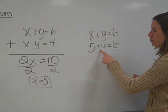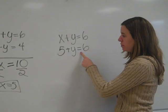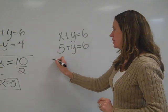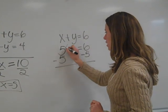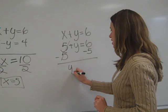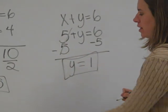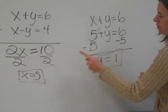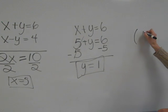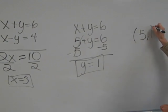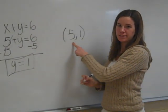So now I have 5 plus y is equal to 6. I subtract 5 from both sides, the 5's cancel out, and I get y equal to 1. So my x is equal to 5 and my y is equal to 1, so my final answer will be (5, 1), which relates to the coordinate at which both of those lines intersect.